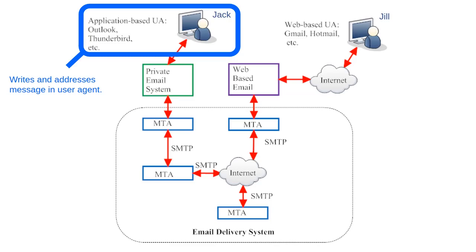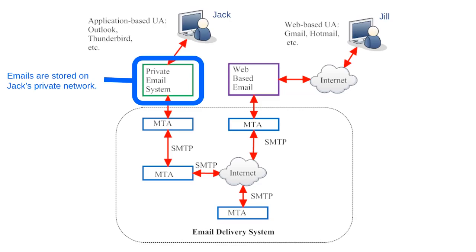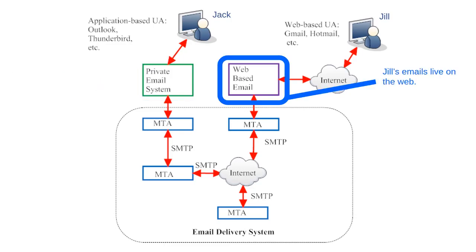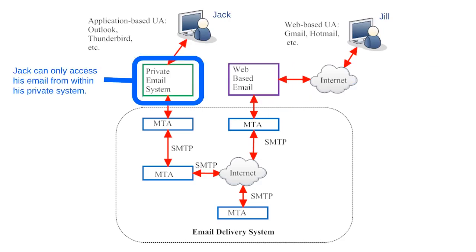For private email systems, users must have an email application like Outlook or Thunderbird installed on their computer in order to access their private emails. A private email system also means that Jack's emails are stored on Jack's private network — in fact, he may just store them right on his computer. Jill, on the other hand, has a web-based user agent, which stores her emails out on the web. This means Jill can send and receive emails from any computer with an internet connection, whereas Jack can only do so from within his private network. If it's a home network, Jack may only have one computer connected to it.